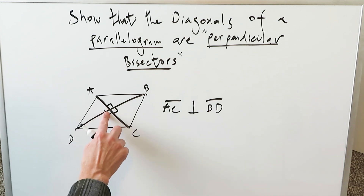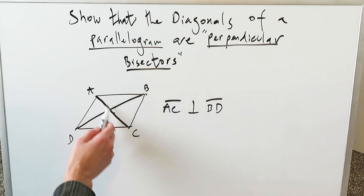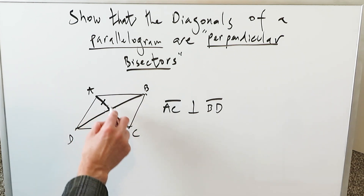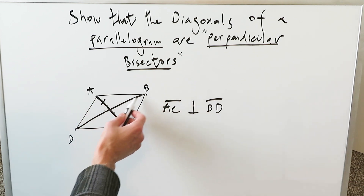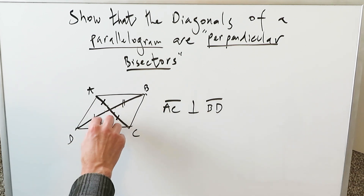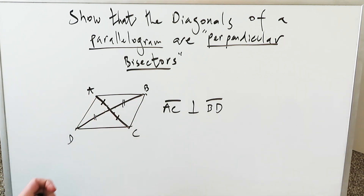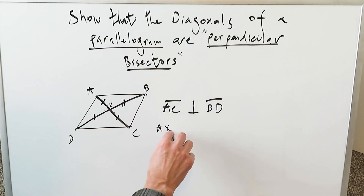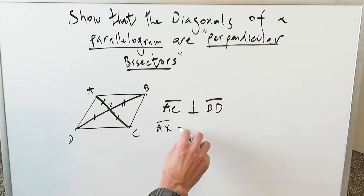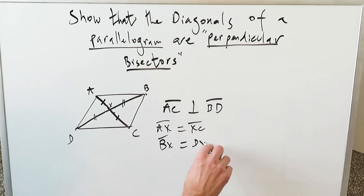If I erase this and show it to you, you will see exactly what I'm talking about. This diagonal BD will cut AC into two equal segments — from here to here is equal to from there to there, so it has been bisected into two equal segments. The diagonal AC will cut the diagonal BD into two equal segments as well. If this point here were called X, then we have to show that segment AX is equal to segment XC, and that segment BX is equal to segment DX.